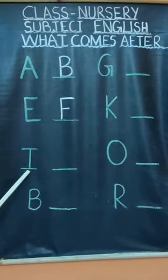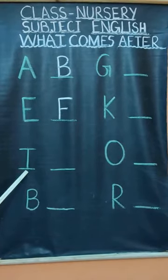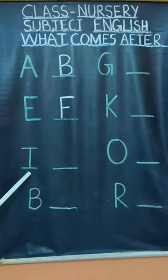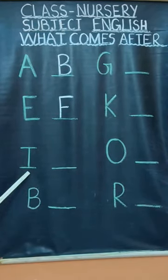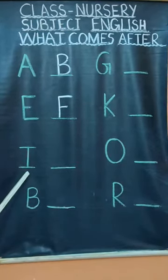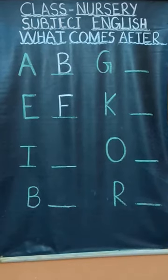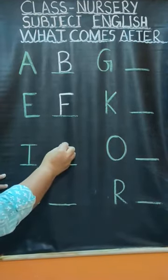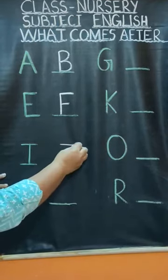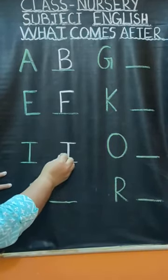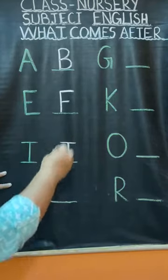Now my dear students, tell me, what is this? I for Ice Cream. Very good. Now tell me, what comes after I? Yes — J for Joker. Very good. So you will write J for Joker on the blank space.